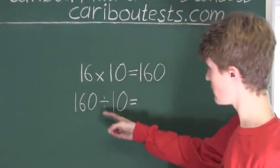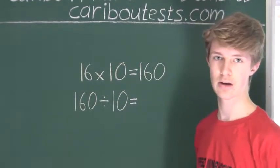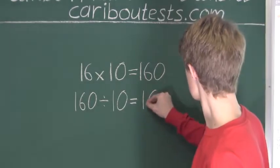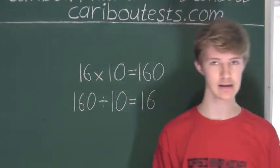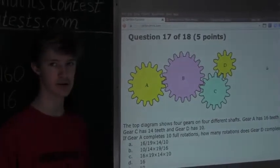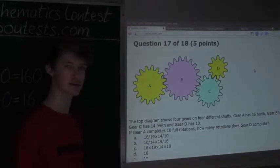So 160 divided by 10 to find out the number of full rotations, and that is 16. Therefore, we know that gear D makes 16 full rotations. So the answer is D, 16.